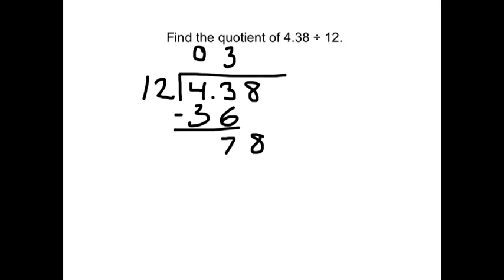Bring down the 8. And now, I need to skip count and figure out how many 12s go into 78. So we've got 12, 36, 48, 60, 72, which is 6 times. 12 times 6 is 72. See what's left over. That's a 6.